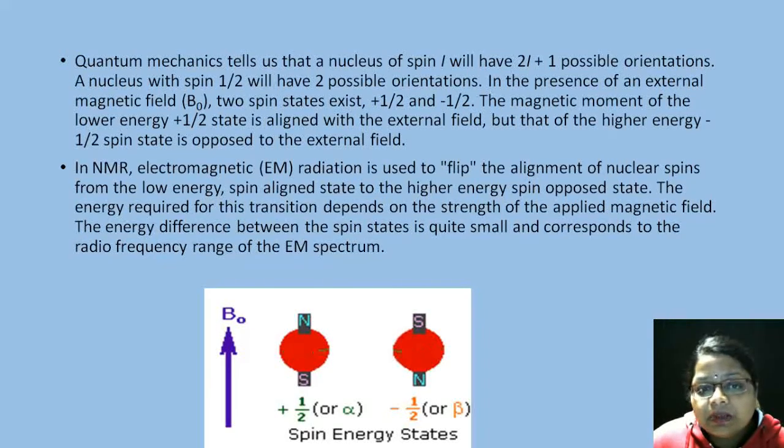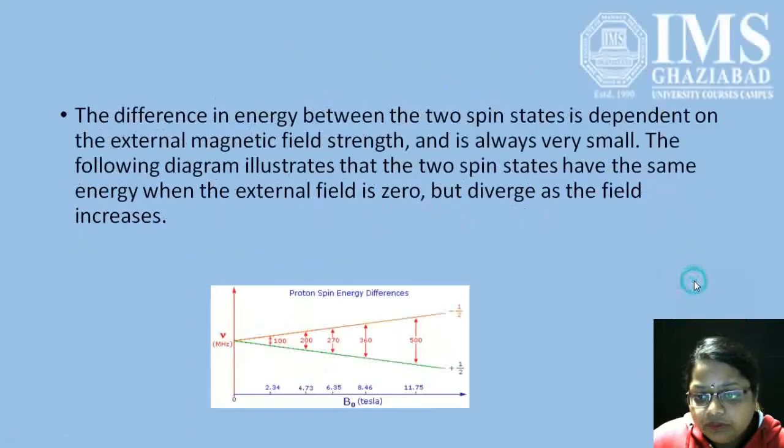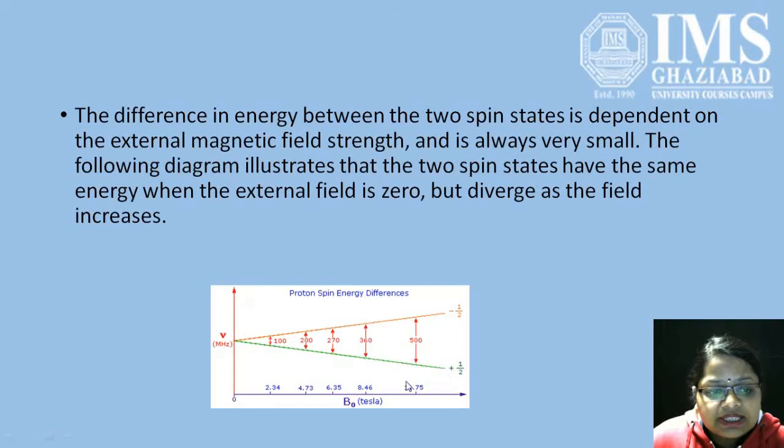The energy difference between the spin states is quite small and corresponds to the radio frequency range of the EM spectrum. These are the two spin states: plus 1/2 and minus 1/2, with the nucleus flipping between these two energy states. The difference in energy between the two spin states is dependent on the external magnetic field and is always very small. This figure illustrates the two spin states have the same energy when the external field is zero, but diverge as the field increases. When we increase the field, more energy is required to flip the nucleus from the lower energy state to the higher energy state.